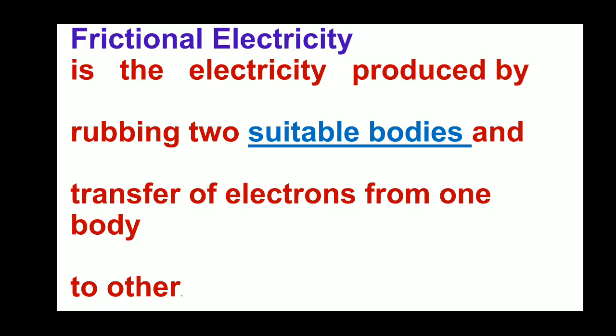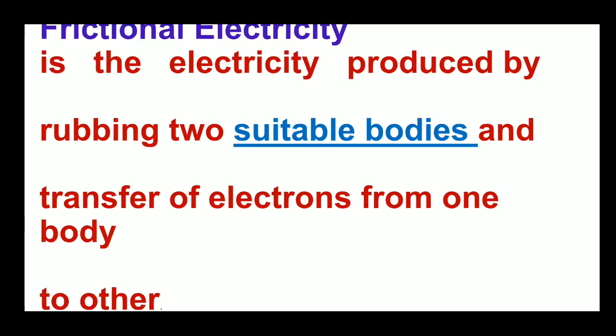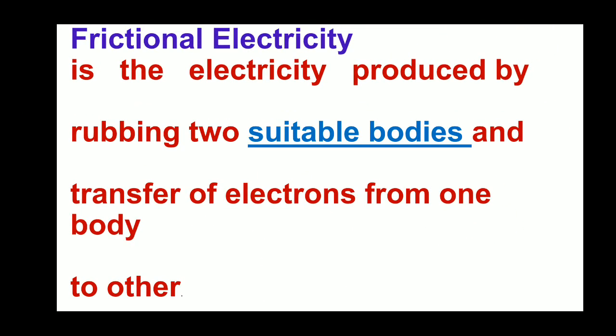It is electricity produced by rubbing two suitable bodies — it will not happen with every body. Two suitable bodies, and it is the transfer of only the electrons — not at all the protons. Only electrons flow from one body to another. Based on the movement of the electron, we call the object positively charged or negatively charged.